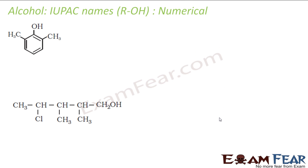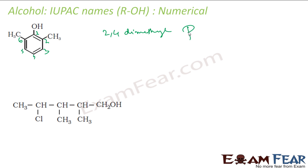Let's see this compound: CH3-OH-CH3. The OH is my primary group, so I'll number the ring. At positions two and four I have methyl groups, so it is 2,4-dimethylphenol.